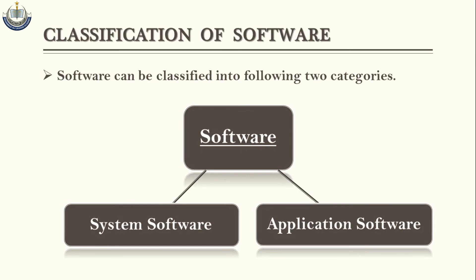Now here is the classification of software. Software can be classified into two categories: number one, system software; number two, application software. Software ki in dono categories ko hum is chapter ki next video lecture mein discuss karenge.